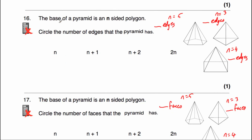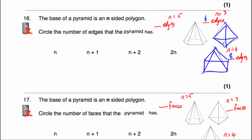Question number 16: the base of a pyramid is an n-sided polygon. Circle the number of edges. For a triangular base pyramid (n=3): 3 edges on the base plus 3 leading up = 6 edges. For a square base pyramid (n=4): 4 + 4 = 8 edges. For a pentagon base pyramid (n=5): 5 + 5 = 10 edges. The number of edges is double n each time, so the answer is 2n.